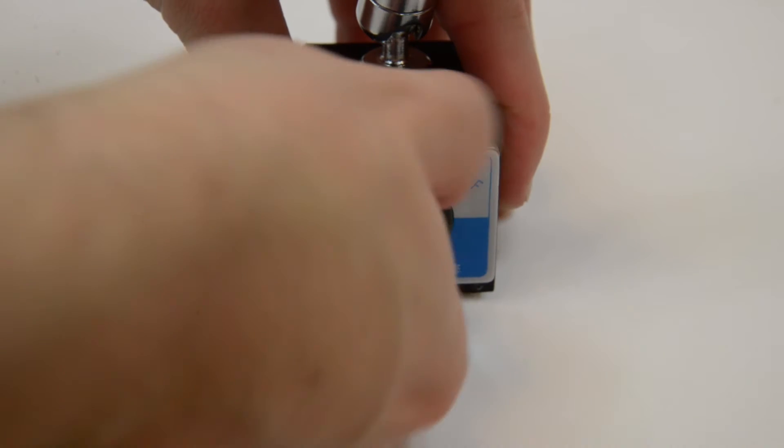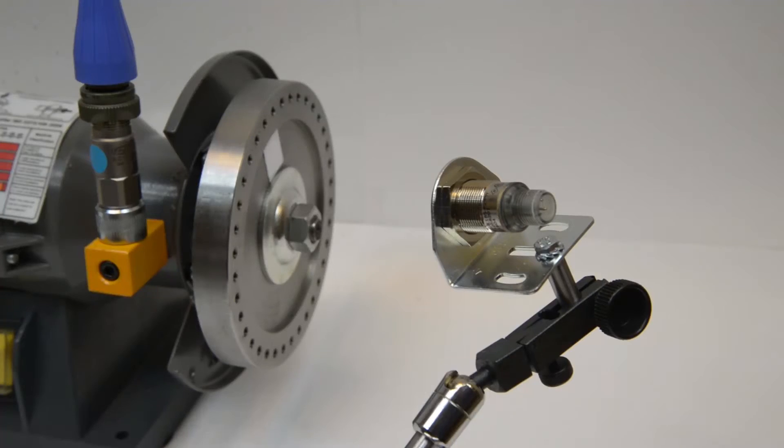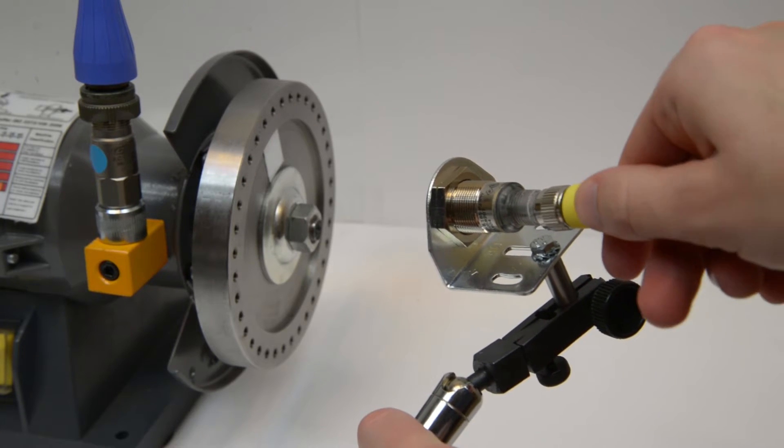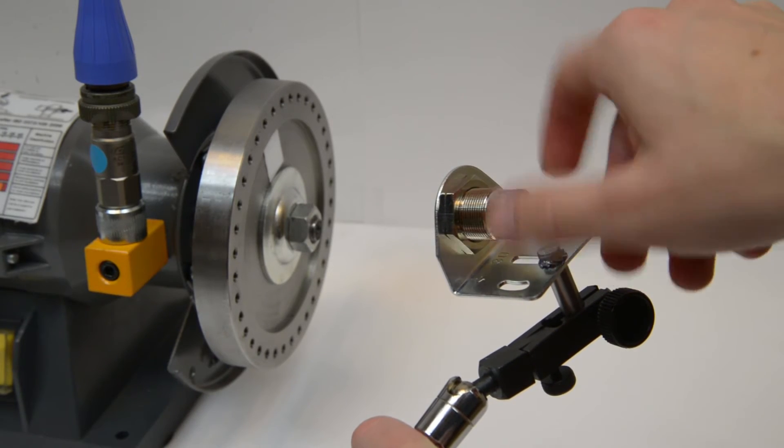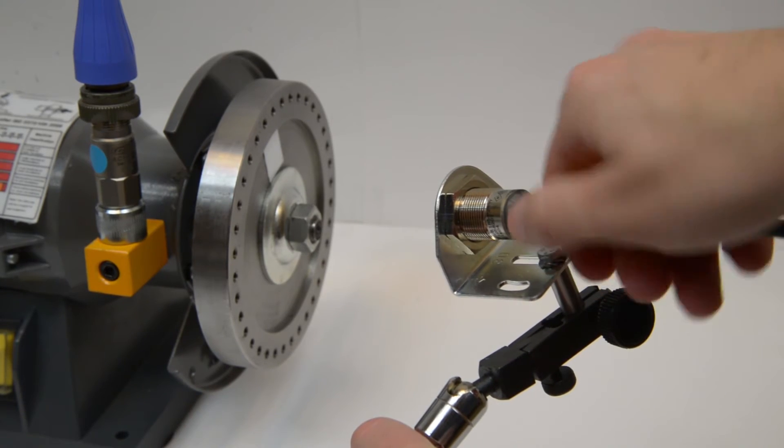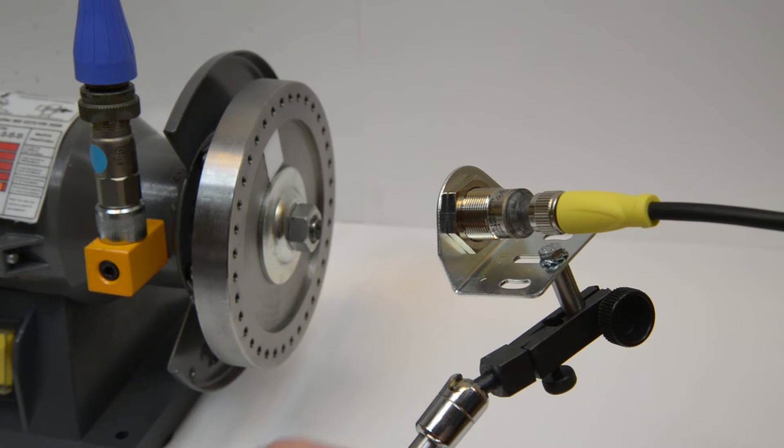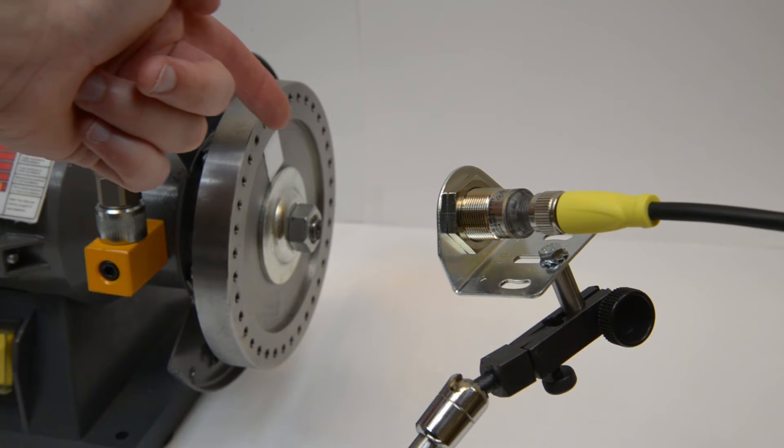Now, put the magnetic base on a metal surface and turn the switch to on. The yellow TACO cable is connected to this TACO sensor. And the red light from it should be pointing on the reflective tape. Make sure the sensor is not moving once it's positioned correctly.